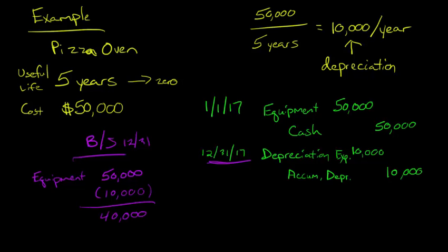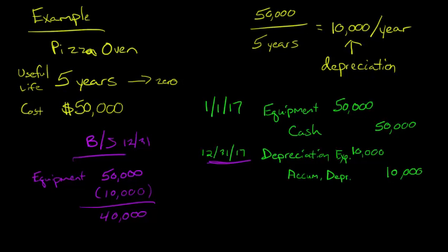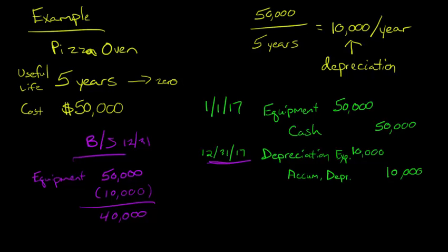What has happened here? Well, we've taken some of the cost of this asset and expensed it, because now we've used this asset for one year. We've used basically 20% — one out of the five years — of this asset, and we recorded that as depreciation expense. Now, what if we say that this pizza oven at the end of the five years is not going to be worth zero? Let's say it's going to be worth $10,000.